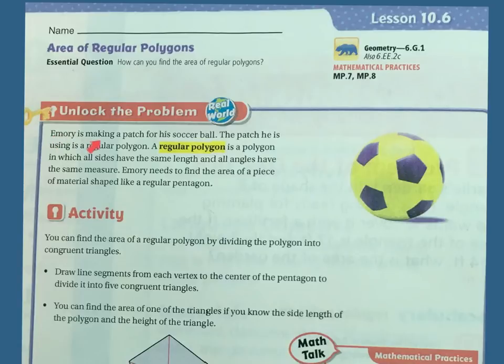Let's unlock the problem. Emory is making a patch for his soccer ball. The patch he is using is a regular polygon. A regular polygon is a polygon in which all the sides have the same length and all of the angles have the same measurement. Emory needs to find the area of a piece of material shaped like a regular pentagon.